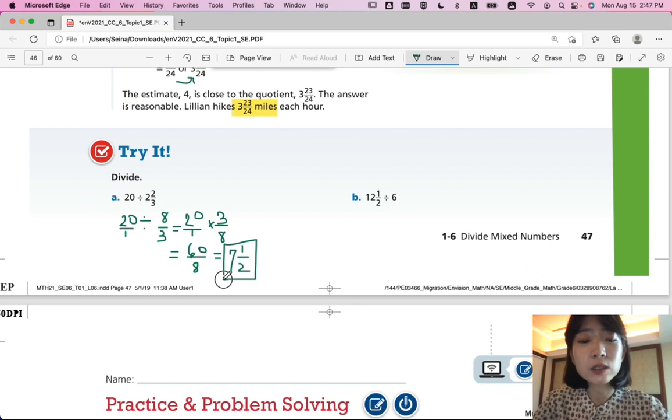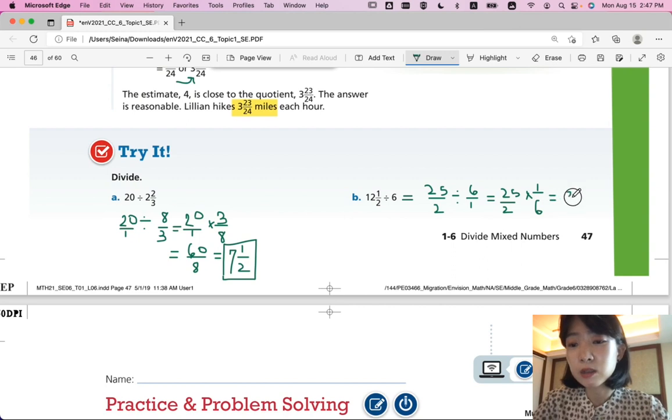Part B, 12 and 1 half should be changed into 24 plus 1, 25 over 2 divided by 6 over 1 and you can change that into a multiplication 25 over 2 times 1 over 6 and that means you get 25 over 12 and that is equivalent to 2 and 1 over 12.